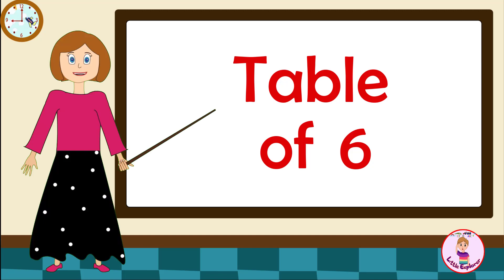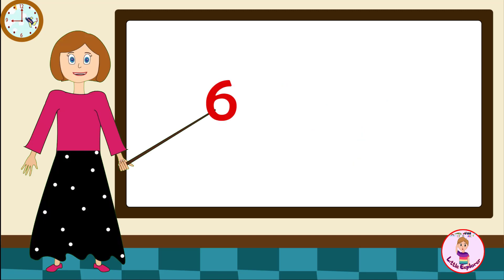Table of six: six ones are six, six twos are twelve, six threes are eighteen, six fours are twenty-four, six fives are thirty.